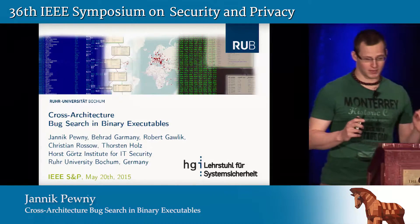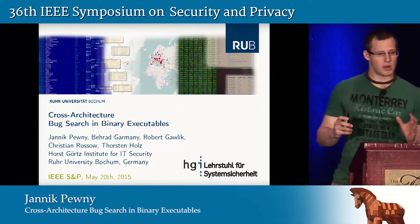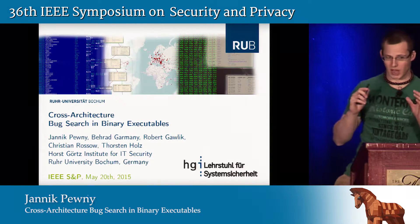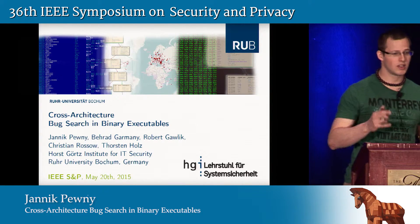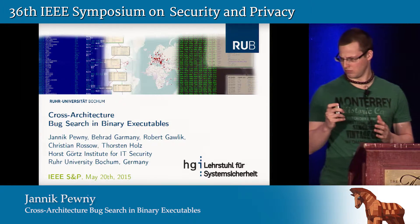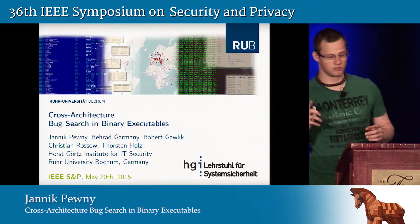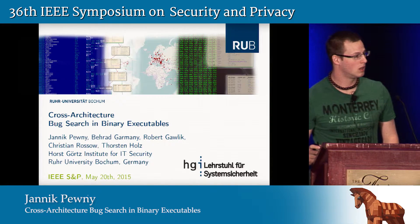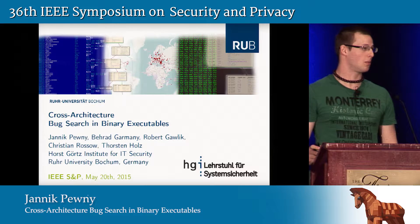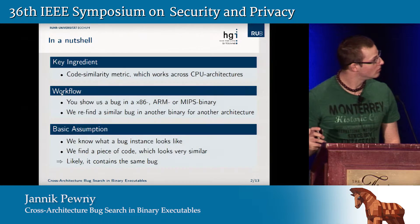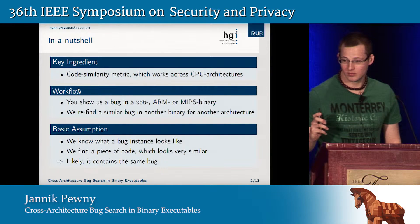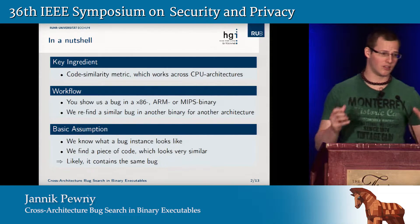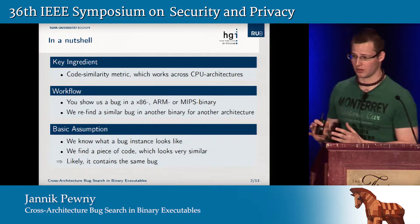So, ASSET cross-architecture bug search. If you ever feel a little bit lost in this talk, just remember that the key ingredient is a code similarity metric which happens to work across CPU architecture. If you ask yourself why we are doing all this preprocessing stuff, it's to set up this key ingredient.